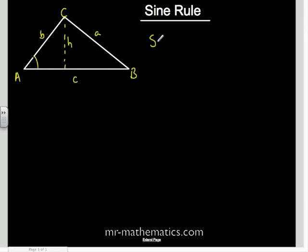We're going to call that h. We're going to look at sine of angle A, which is the opposite h over the hypotenuse b. We'll call that equation 1. Then we'll look at sine of B, which is the opposite h over the hypotenuse, in this case a.